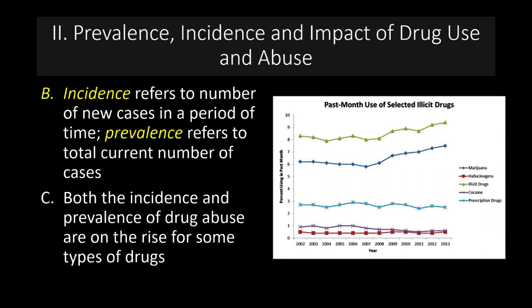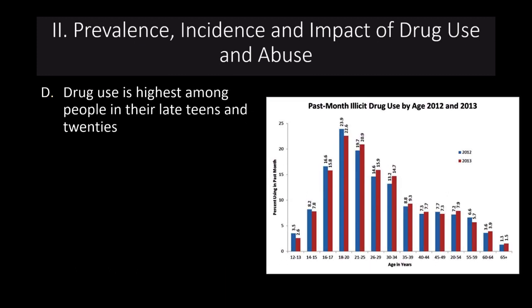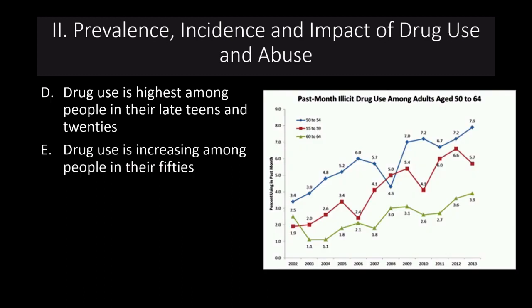Looking at past month use of selected illicit drugs — and marijuana is illicit or not depending on where you live — we can see an uptick in marijuana use and relatively unchanged amounts for most other drugs, along with a recent uptick in cocaine use. Drug use is highest among people in their late teens and early 20s, when people are experimenting and partying more. Use diminishes later in life, though drug use is increasing among people in their 50s — nearly doubling from 2002 to 2013, representing around 5 to 7% of that population.